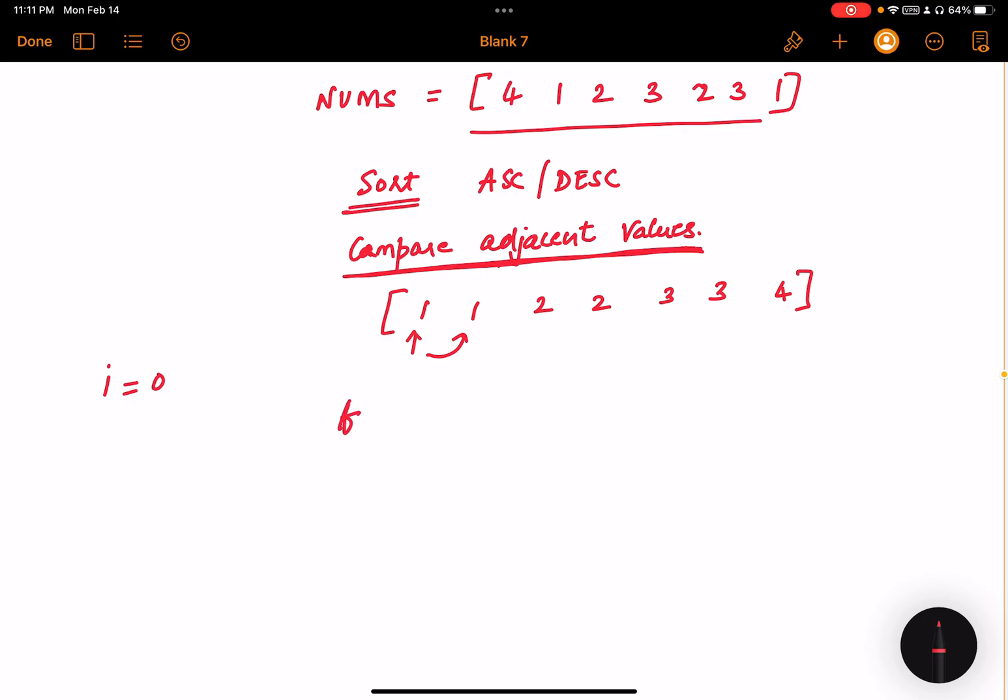Starting with iteration, so i is equal to zero. So I will compare i with the next value. So my first value is one. Is it equal to the next value one? Yes it is.